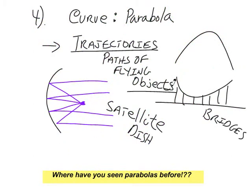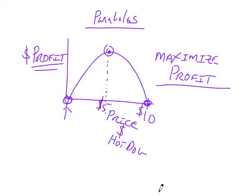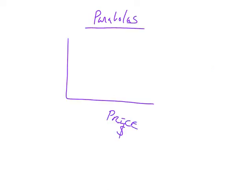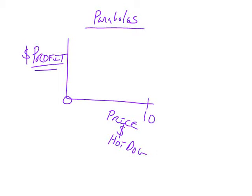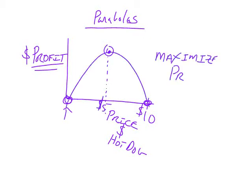You see parabolas in bridges, satellite dishes, and every time something flies through the air. You also see them when you maximize profit. If you're figuring out what price to charge for your hot dogs — at zero dollars you make zero money, at ten dollars nobody buys, so somewhere in between is the perfect price. If you don't think you use this in business, you're crazy.